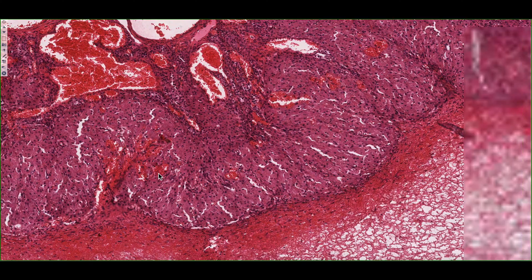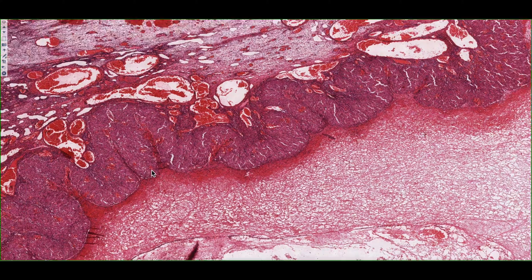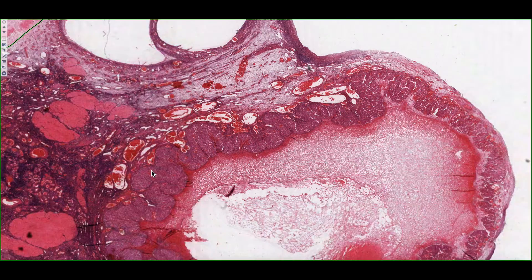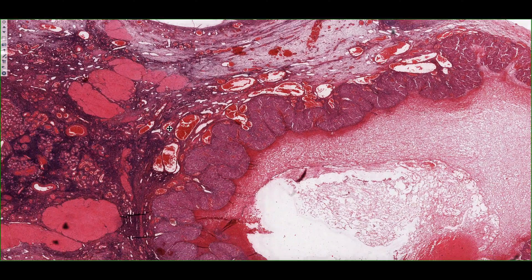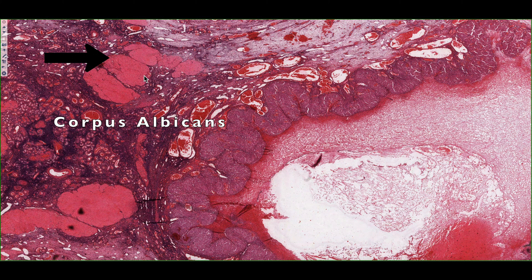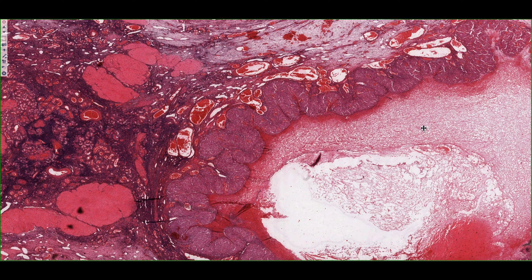If implantation doesn't occur, the corpus luteum will begin to break down. This is what we see on the left-hand side of this specimen, or histological slide — we can see these fibrotic scars, and these are called the corpus albicans. After 14 days post-ovulation, these corpus albicans will form and we'll have a breakdown of the corpus luteum.